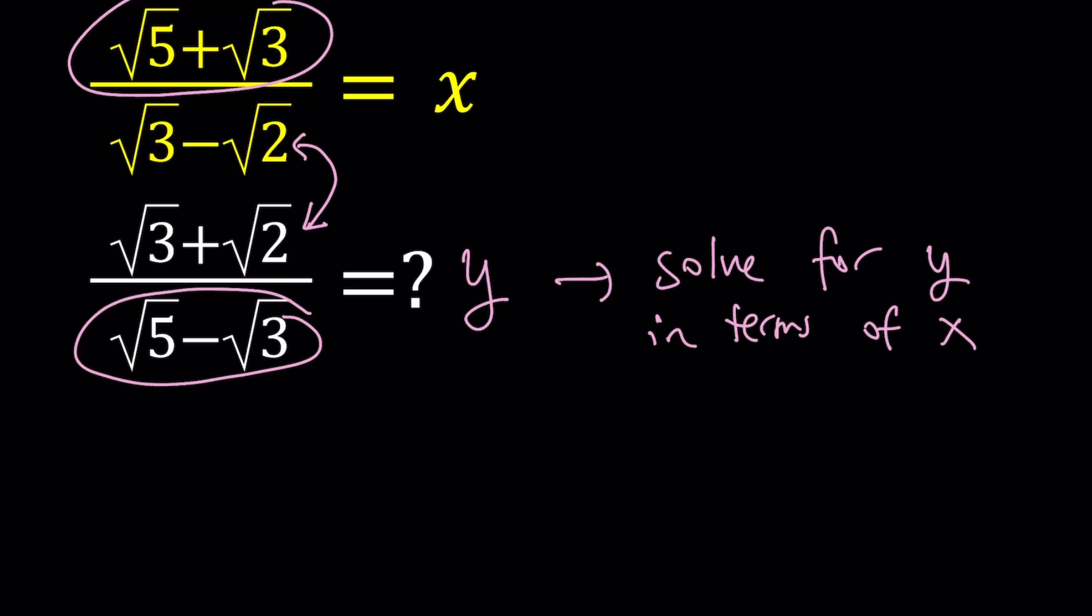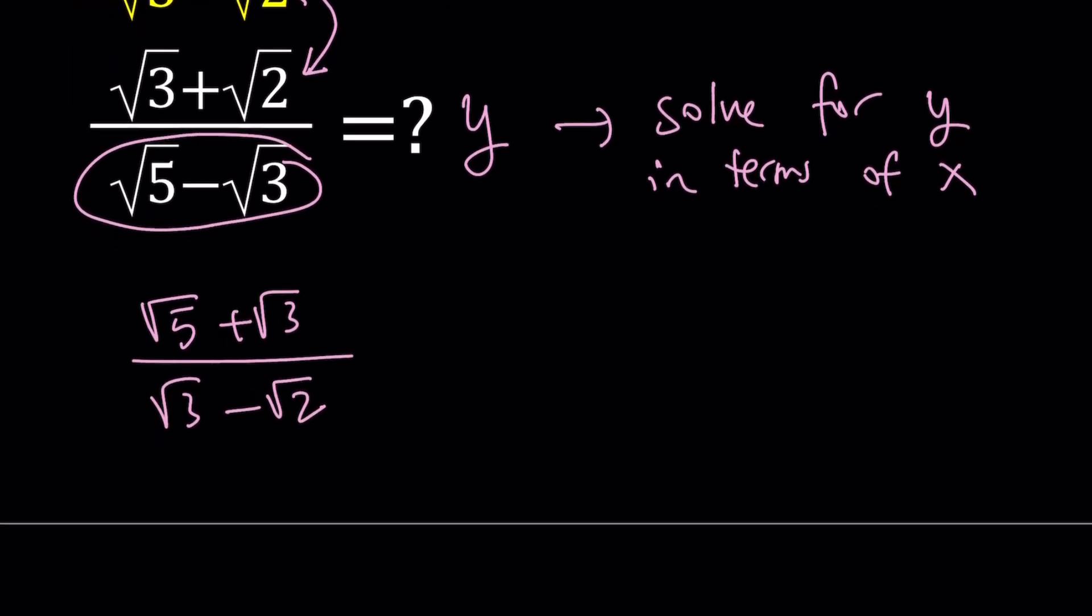Now, since I mentioned that these numbers are conjugates, we're going to multiply them accordingly. I'd like to multiply root 5 plus root 3 over root 3 minus root 2 by root 5 minus root 3 over root 3 plus root 2.